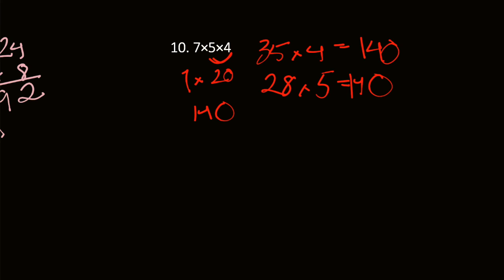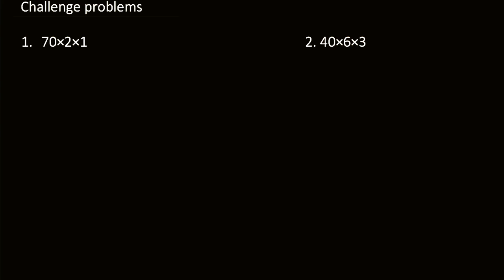Now we're going to do some challenge problems — these ones are a little bit harder, but I'm sure you can do them. First up: 70 times 2 times 1. Using the associative property, since multiplying by 1 gives the same number, 2 times 1 is 2, and then 70 times 2. When you multiply by a multiple of 10 like 70, you do 7 times 2, which is 14, then add a 0 at the end, giving 140. You could also group 70 and 2 to get 140, then multiply by 1, which is still 140.